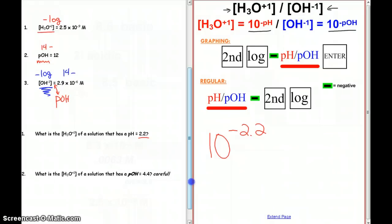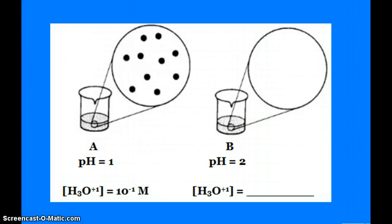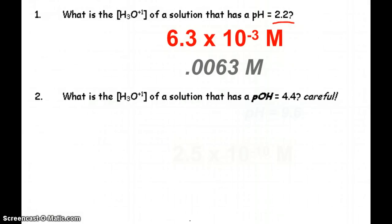And so if you're using a graphing calculator, you hit second log, a 10 appears. You type in negative 2.2 and hit enter. If you're using a regular calculator, type in 2.2, then the negative sign, then second log. And either way you do this, you should get the answer of 0.0063 molar, or if you want to change it to scientific notation, 6.3 times 10 to the negative 3 molar. Again, since I only gave you 2.2 for the pH, I only need the 6 and the 3.